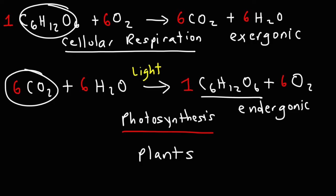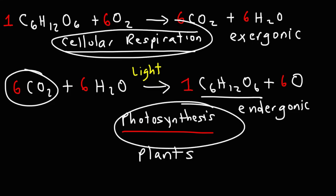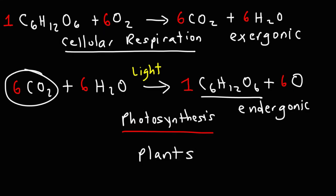Those are two important processes that you want to be familiar with if you're taking biology. Cellular respiration and photosynthesis. Remember, animals and people undergo cellular respiration. They use glucose and oxygen to produce energy, releasing carbon dioxide and water vapor. Plants, on the other hand, can perform the opposite process, photosynthesis. They take in carbon dioxide and water, using light to produce glucose and oxygen gas.